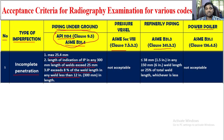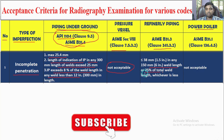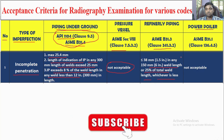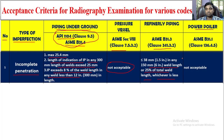For ASME Section VIII, division 1, division 2, and division 3, incomplete penetration is not acceptable. For ASME B31.3, clause 341.3.2, it is mentioned: less than or equal to 38 mm (1.5 inch) in any 100 mm — 6-inch weld length — or 25% of total weld length, whichever is less. That is the acceptance criteria for ASME B31.3. For power boiler (B31.1), incomplete penetration is also not acceptable.